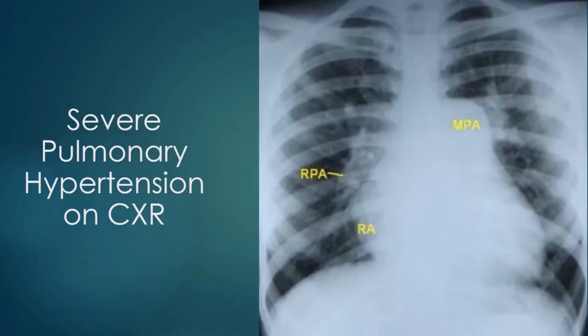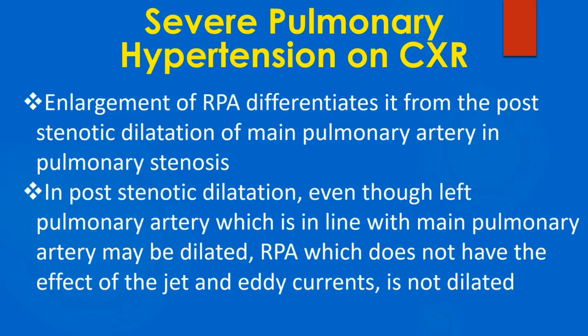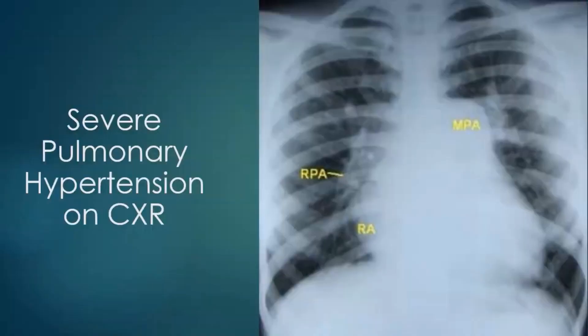The striking feature on this chest X-ray is the remarkably prominent main pulmonary artery segment, which appears aneurysmally dilated. The right pulmonary artery is also enlarged. Enlargement of the RPA differentiates this from post-stenotic dilatation of the main pulmonary artery seen in pulmonary stenosis — in post-stenotic dilatation, even though the left pulmonary artery may be dilated, the right pulmonary artery, not affected by jet and eddy currents, is not dilated. This X-ray also shows a prominent right atrial contour indicating right atrial dilatation as a consequence of pulmonary hypertension and right ventricular hypertrophy.